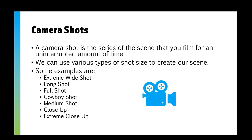A camera shot is the whole series of a scene that you're filming for an uninterrupted amount of time. It doesn't matter if the object is moving, or you're going between different areas, or you're moving the camera — until you stop filming, that is one camera shot. We can manipulate and change the shot size to create our scene and start developing that story.